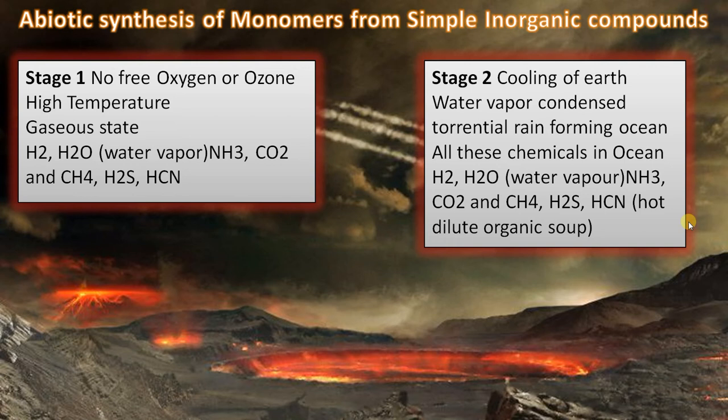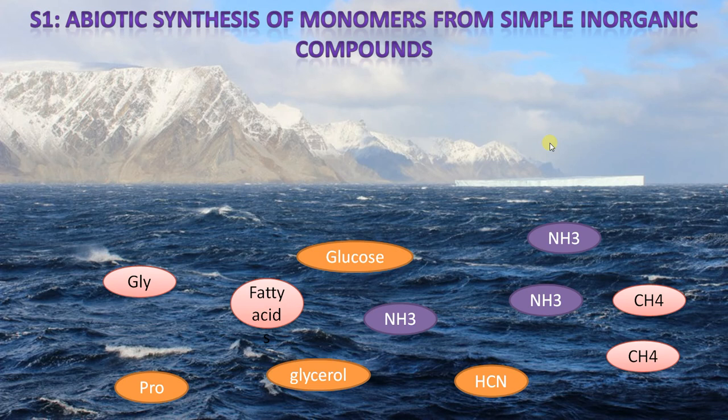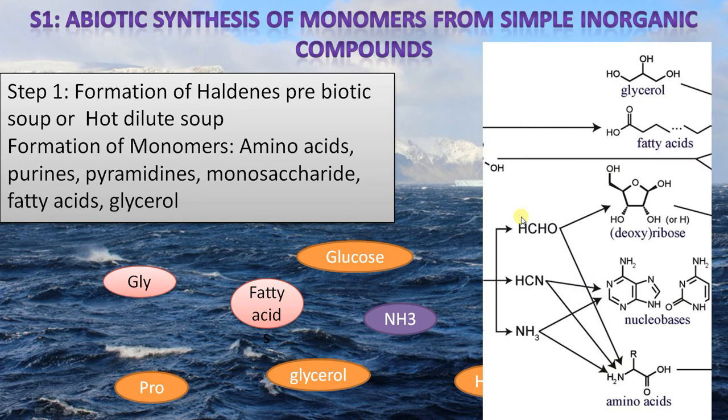All these chemicals were now in the ocean. Haldane called this the 'hot dilute organic soup.' The conditions were suitable for chemical reactions. Energy sources for these reactions were lightning, UV rays, ionizing radiation, and volcanic activities. These simple inorganic compounds — ammonia, methane, hydrogen cyanide — now in the oceans reacted to form monomers: glucose, amino acids, fatty acids, etc.